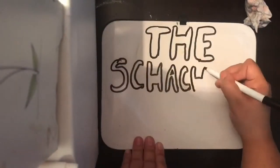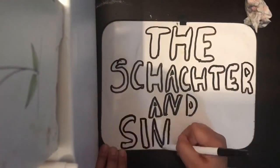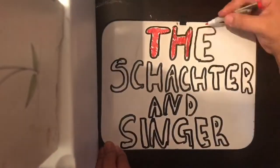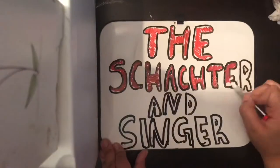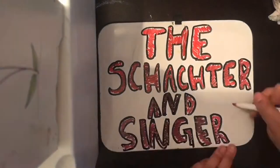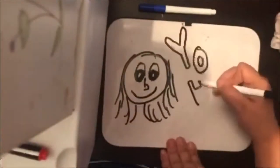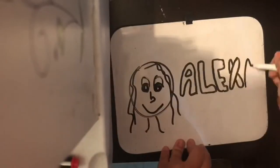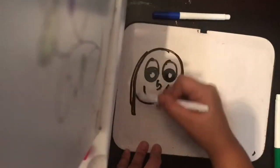Hello, this is the Schachter and Singer study done in 1962. The aim of the study was to test the two-factor theory of emotion. This study will be presented by Johanna, Alexis, and Paula.